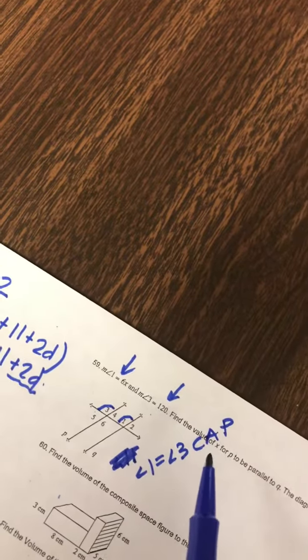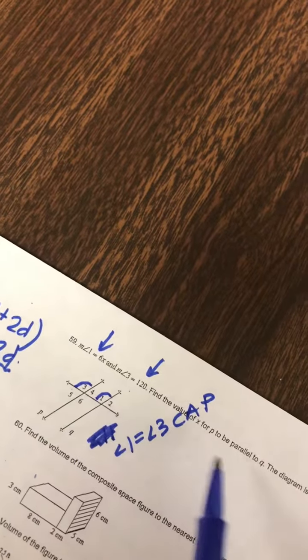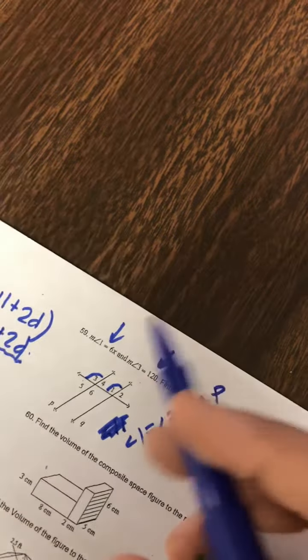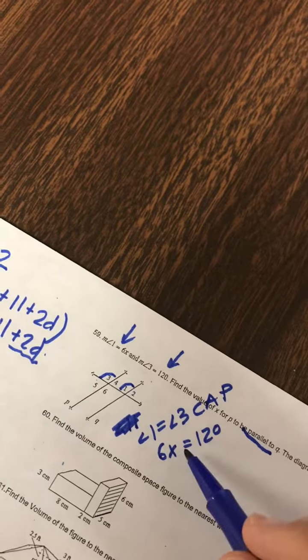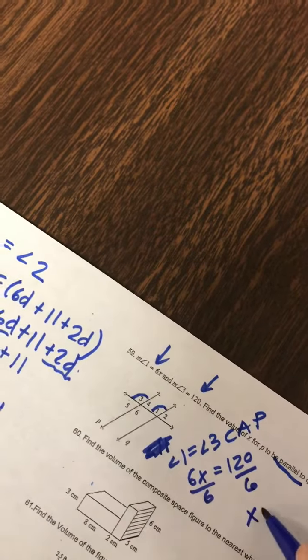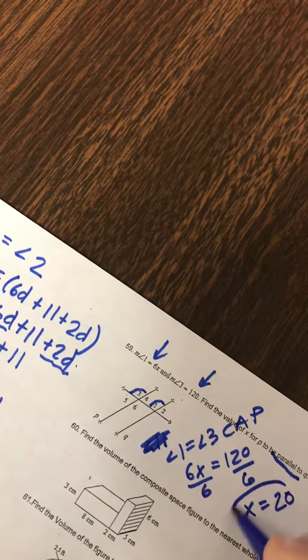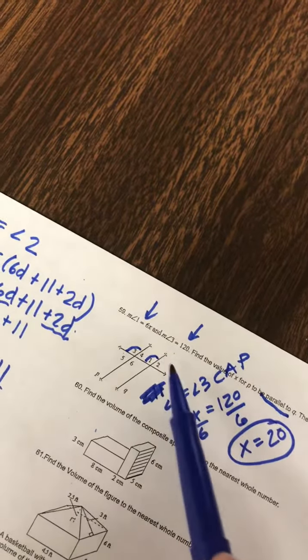So we don't know that they're parallel, but it's saying, if in fact, what would X need to be to make them parallel? So in the same way, they're asking a slightly different question, but ultimately the same outcome. They would have to be equal if these are in fact parallel. So when we set them equal to each other, I get X is 20. So X needs to be 20 in order for these two lines to be parallel.